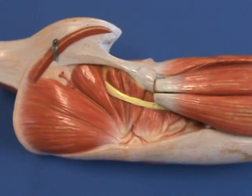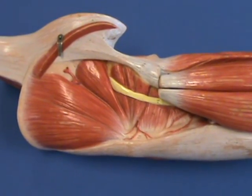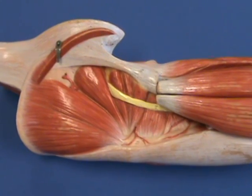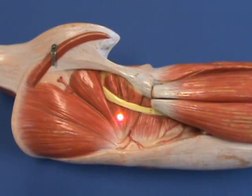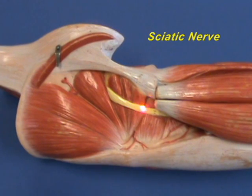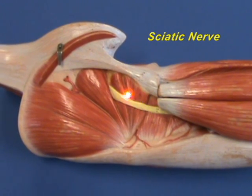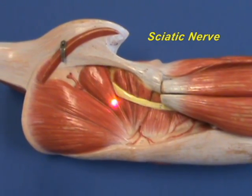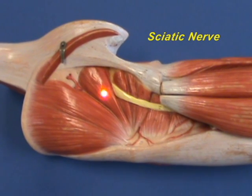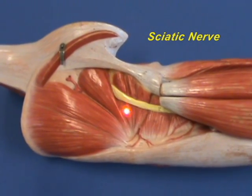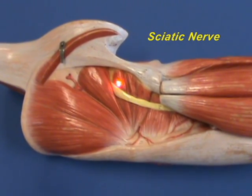Before we talk about the next muscles, let's note an important landmark which you can easily see here — the sciatic nerve. The sciatic nerve is coming out from between the piriformis muscle and the superior gemelli muscle.